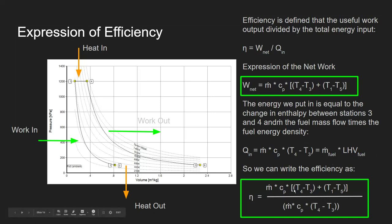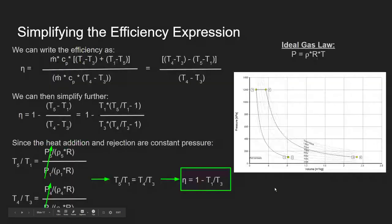Taking our efficiency expression and simplifying: we first cancel out mass flow and Cp since they are constants for our fluid and system. We're left with an expression in temperature differences. Using a common denominator and breaking up the expression, we arrive at: η = 1 − (T₅ − T₁) / (T₄ − T₃).